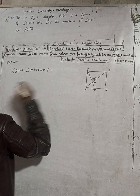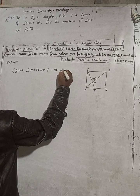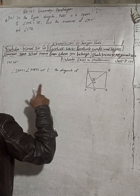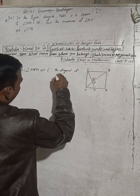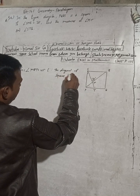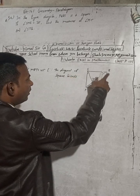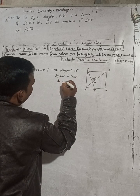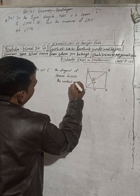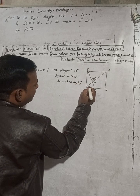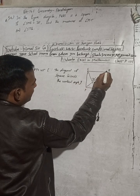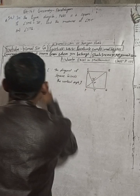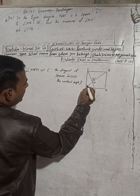The reason for this is that the diagonal of a square bisects the right angle. The diagonal bisects the 90-degree vertex angle, so each half is 45 degrees. That is why both angles are 45 degrees.